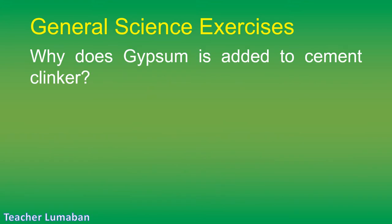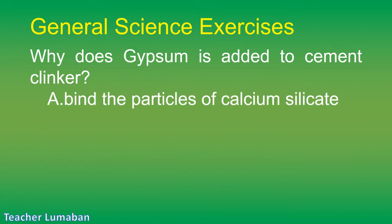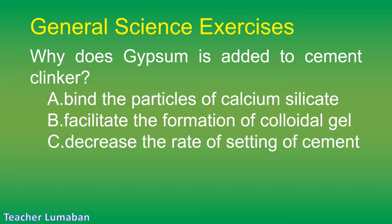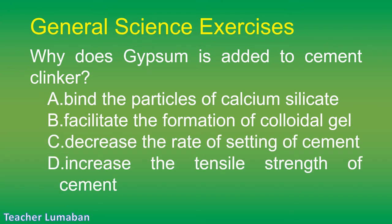Why is gypsum added to cement clinker? Letter A: to bind the particles of calcium silicate. Letter B: to facilitate the formation of colloidal gel. Letter C: to decrease the rate of setting of cement. Letter D: to increase the tensile strength of cement.